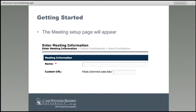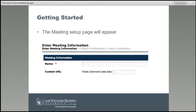You can see on your screen the Enter Meeting Information page will appear. At the very top there are two items: the name and the custom URL. The name field is what you're going to name your meeting. If you want to reuse your meeting, you can create a name like "Jennifer's meeting space" with a URL like connect.case.edu/Jennifer. You can give that URL to people to allow them access to that meeting space. You do need to assign a name, but you do not have to have a custom URL — Connect will assign a random URL for you.